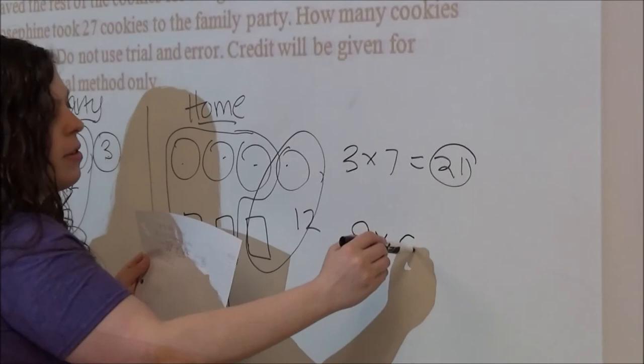And if you want to check it, 45 plus 21 is 66.